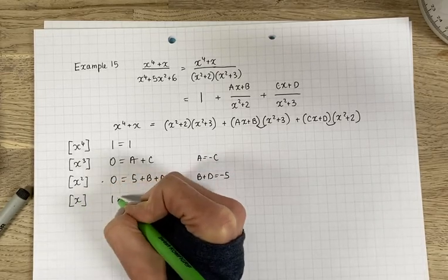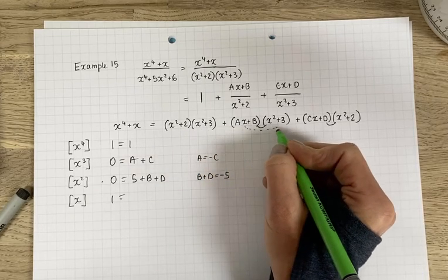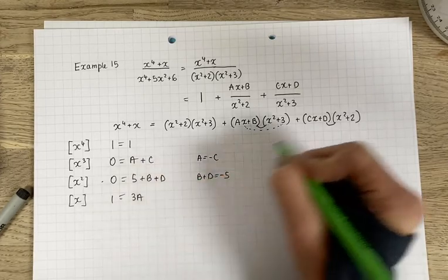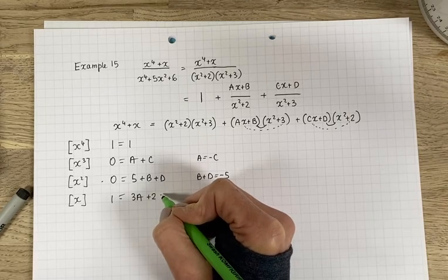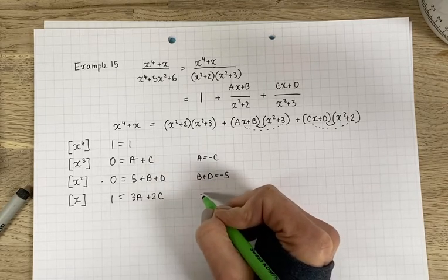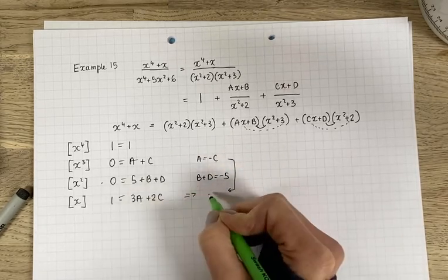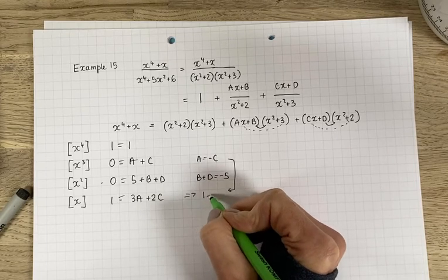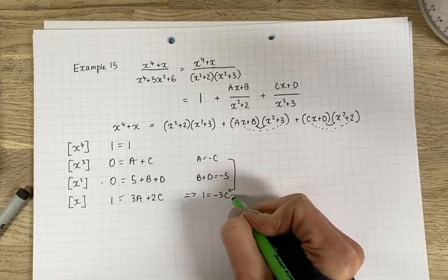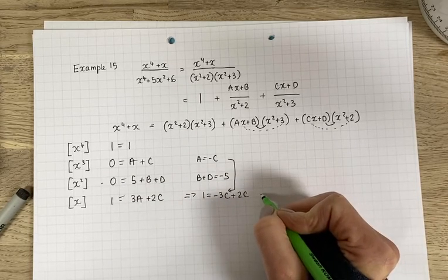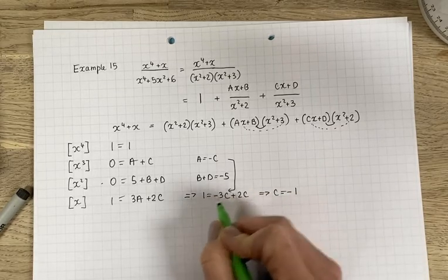X's. You've got 1 on the left hand side. No x's from this bracket. Here you've got ax times 3 so 3a lots and cx times 2. So 2c lots. Right. So actually you could find using this one here. We can find what c is first. It's 1 is equal to substitute minus c. You'll have minus 3c plus 2c. So that gives me c is equal to minus 1 because that will give me minus c is equal to 1.